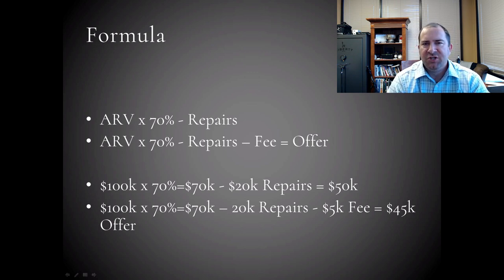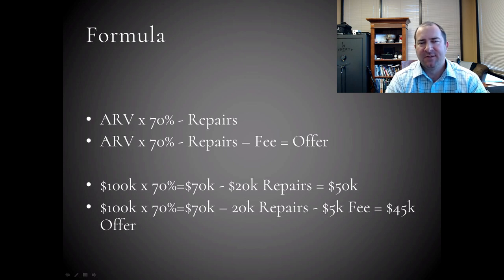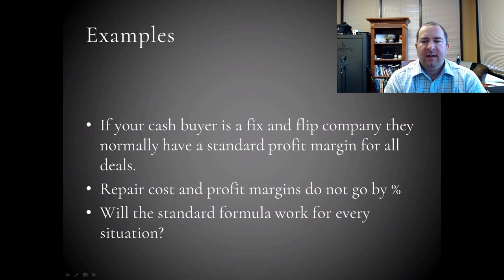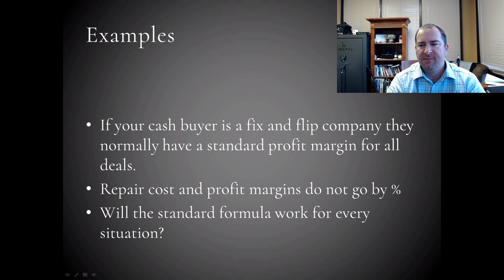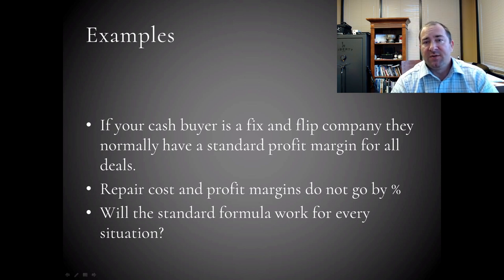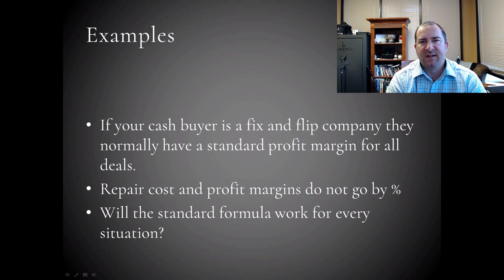This is the general formula that a lot of wholesalers use when making offers, though I can tell you that many do not follow it based on offers I've seen. It's just a guide. If your cash buyer is a fix-and-flip company or turnkey provider — someone who's going to buy the house and fix it up for resale — they typically have a standard profit margin they like to make. Repair costs and profit margins do not work on percentages, and we'll show examples of how this plays out and whether the standard formula works for every situation.